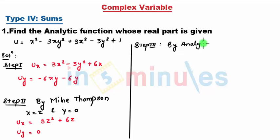Step 3: By the analytic function property, u_x = v_y and u_y = -v_x. So I don't need to change u_x. u_x = 3z² + 6z, but in place of u_y, we write -v_x. So v_x = 0 because the minus doesn't affect it. So I got u_x and v_x.